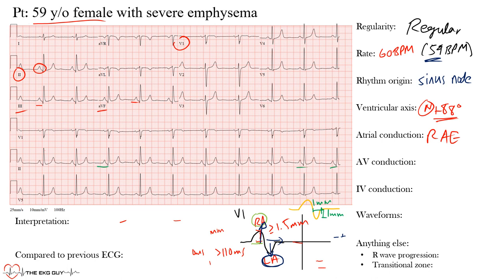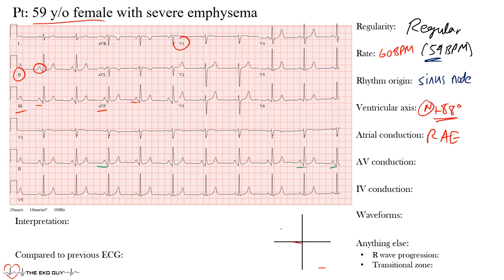Next is AV conduction, focusing on the PR interval. Is it prolonged? Are there any dropped beats or AV block? In this case, AV conduction is normal: every P wave is followed by a QRS complex, there are no dropped beats, and the PR interval — normal in adults between 120 and 200 ms — was 146 ms here, which is within normal limits.